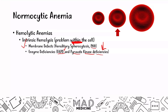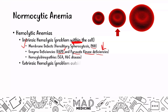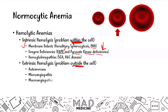You can also have hemoglobinopathies that lead to intrinsic problems and hemolysis. Then you have extrinsic causes where problems outside of the cell lead the cell to lyse — autoimmune issues, problems with blood vessels like microangiopathic and macroangiopathic hemolytic anemias, as well as infections.